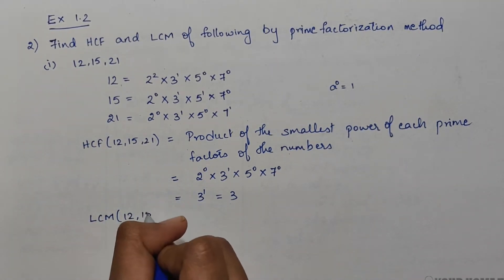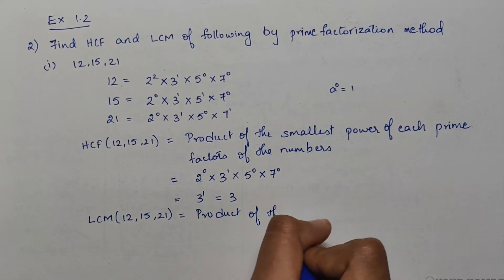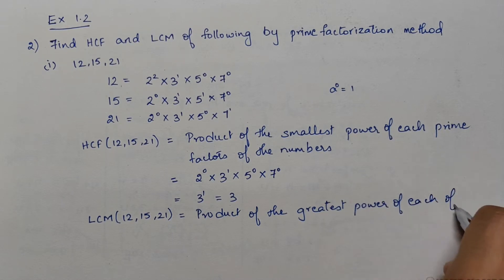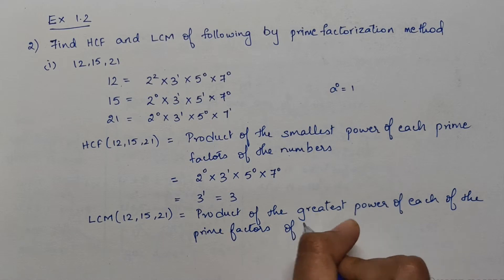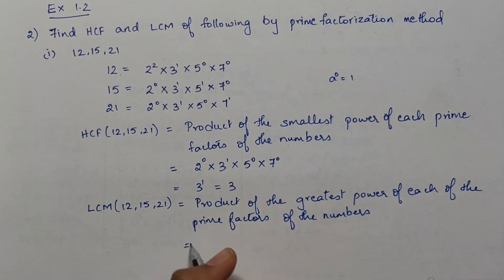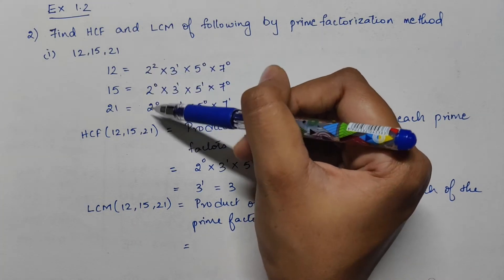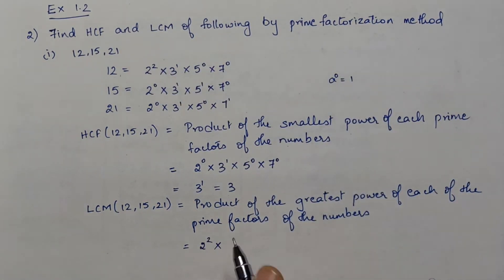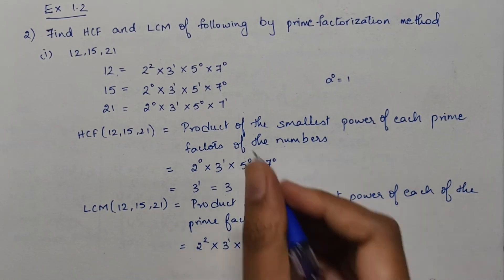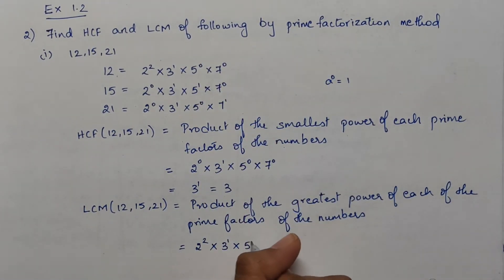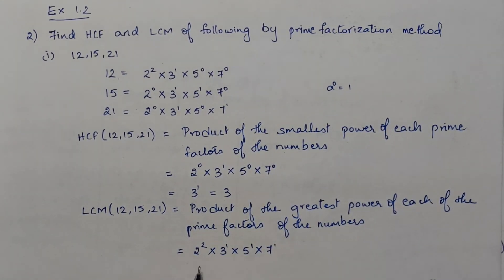Similarly, LCM of 12, 15, and 21 equals the product of the greatest power of each of the prime factors of the numbers. The highest power of 2 is 2². The highest power of 3 is 3¹. The highest power of 5 is 5¹, and 7¹.